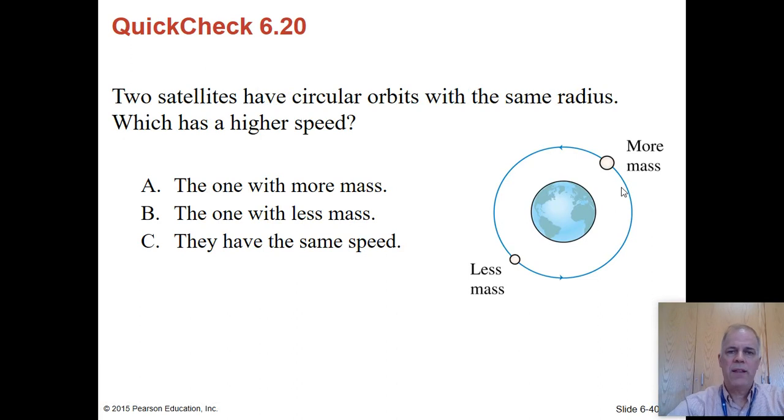Two satellites in circular orbits with the same radius, which has the higher speed. Here's the answer. They both have the same speed, and this is because all objects fall at the same rate. A bowling ball and a baseball with different masses fall at the same rate. So it doesn't matter if one has more mass than the other. They are experiencing the same gravitational field, so they're going to accelerate the same way.